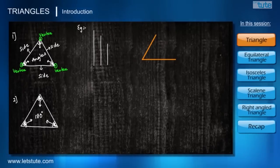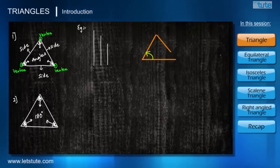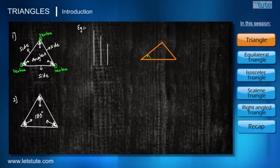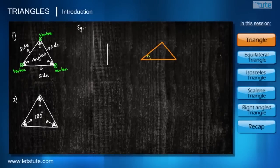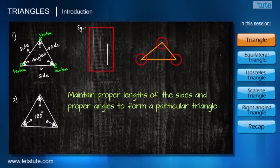Now taking the third line — I'm falling short of the length. What I can do is either increase the length of the third side, or decrease the angle made by the first and second sides — then only I can complete this triangle. So what we understand is we can't make just any triangle with three lines and any angles; we have to maintain proper lengths and proper angles to form a particular triangle.